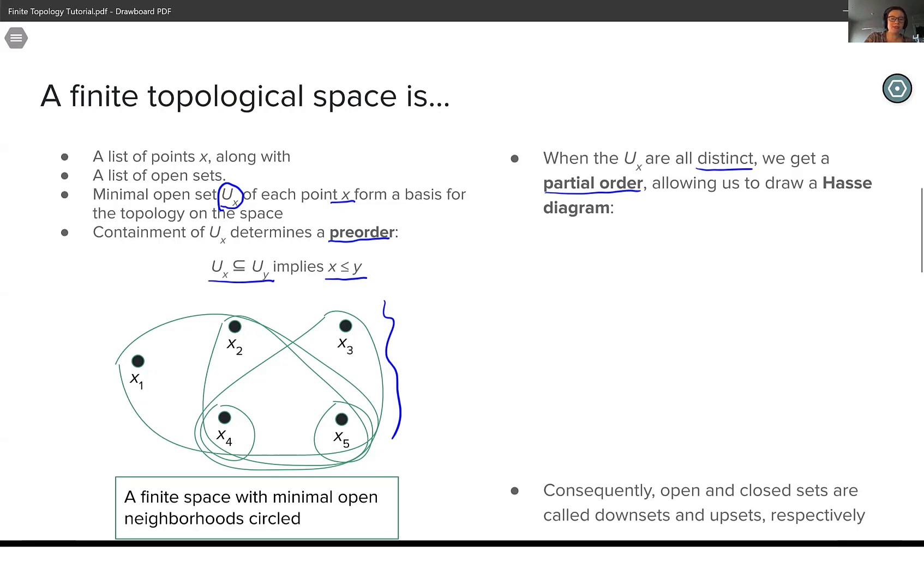So what I have here on the left is a five point space with the minimal open neighborhood about each point circled. And I can use the containment of these minimal open neighborhoods to draw a directed graph. So for example, the minimal open neighborhood of x1 contains all of these four points. So I'm going to start with a point x1 in my Hasse diagram. And it contains as a subset the minimal open neighborhood of x2. So x2 is less than x1.